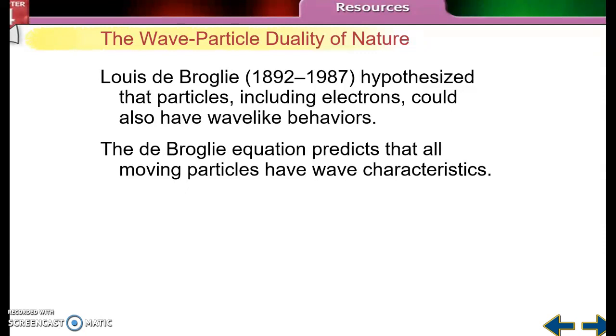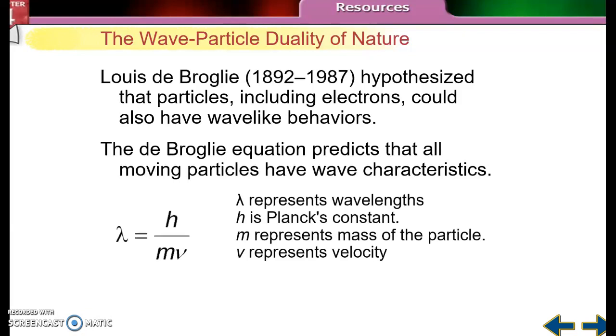Schrodinger did all this math, and he said that electrons are much more like waves. And then there was a guy named de Broglie who hypothesized that electrons, which we know are particles, can have wave-like behaviors. And he predicted that they have wave characteristics. And this is his equation. And we're not actually going to use his equation, but we're going to use the parts of his equation, which are going to be really important.